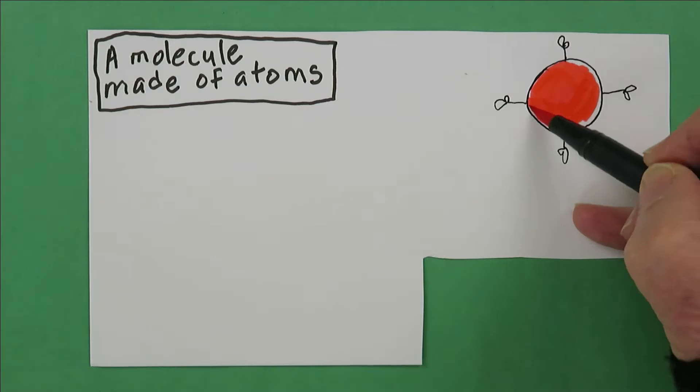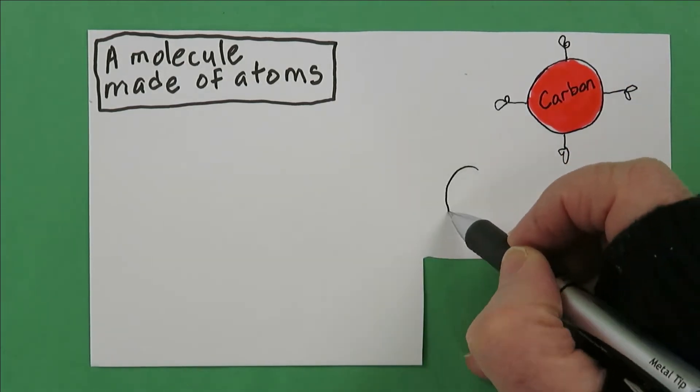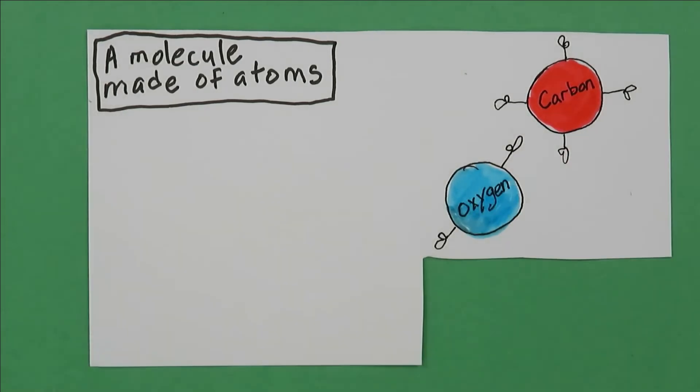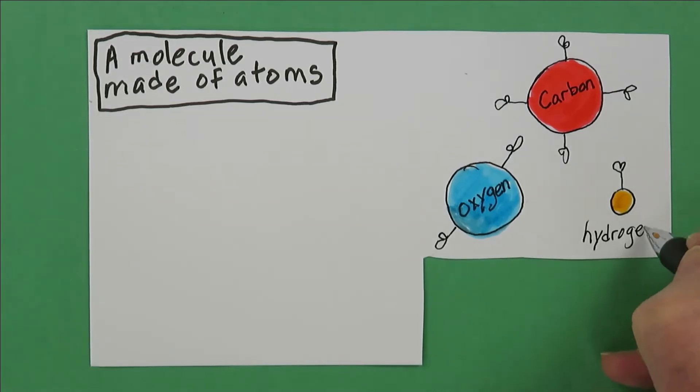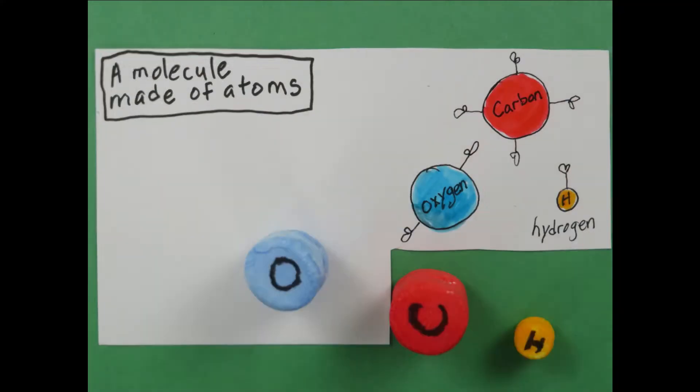Each carbon atom makes four bonds, as if each atom had four hands to grasp other atoms. Each oxygen atom makes two bonds, as if it had two hands to grasp. And let's not forget hydrogen atoms. They make one bond, with just one hand to grasp. Now we're ready to make molecules.